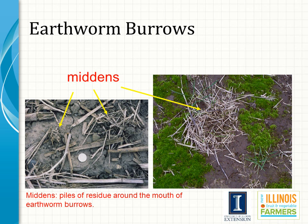Here's an example of what to look for in your fields to see whether there's biological activity, particularly from earthworms. These are middens where earthworms are coming to the surface, gathering organic matter around their hole, and going up and down in their burrow — taking that organic matter down into the soil throughout the day. This is usually very typical of night crawlers.